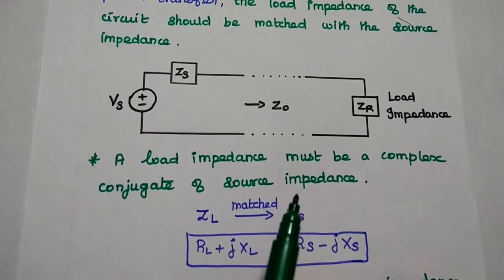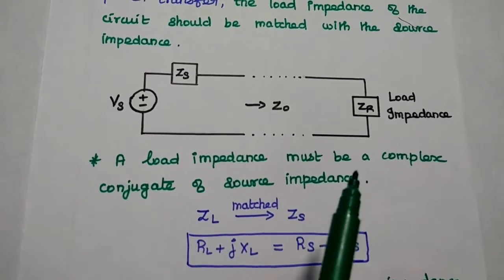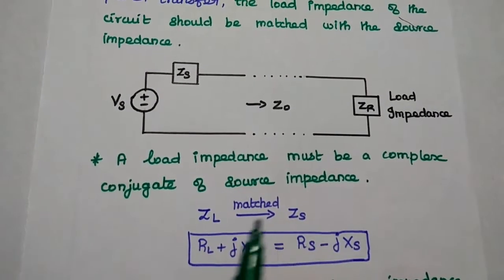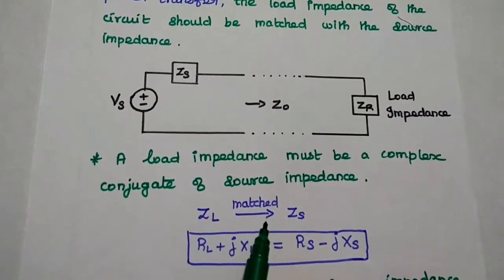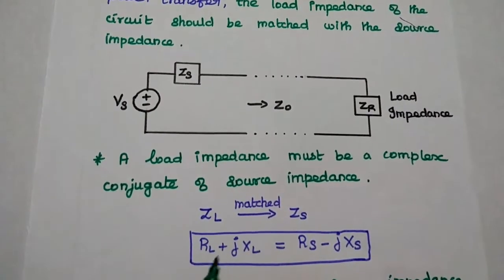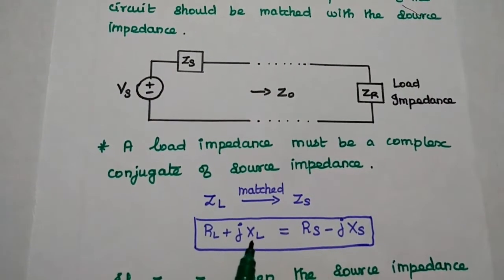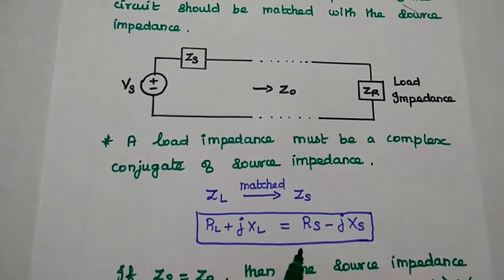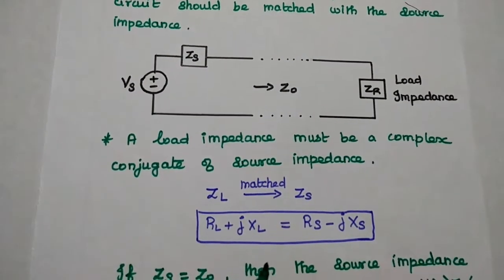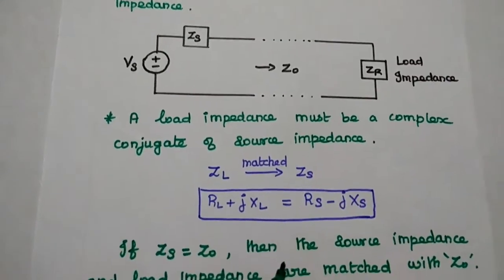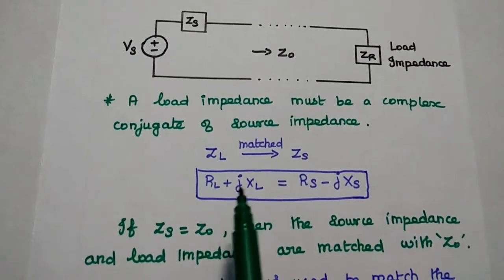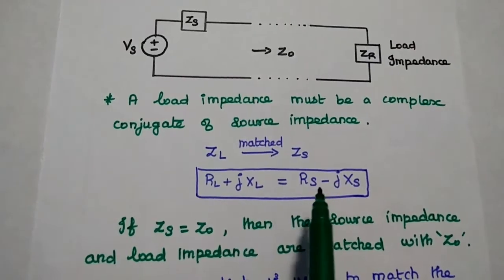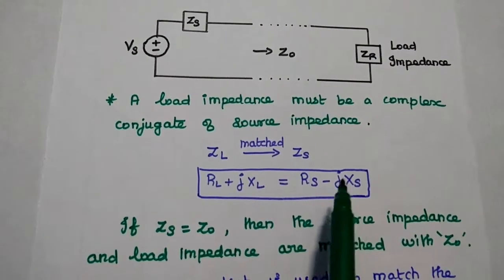The load impedance must be a complex conjugate of the source impedance. ZL should be matched with ZS. That can be achieved by making the load impedance the complex conjugate of the source impedance, represented as RL + jXL = RS − jXS.